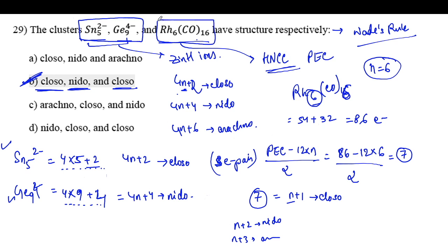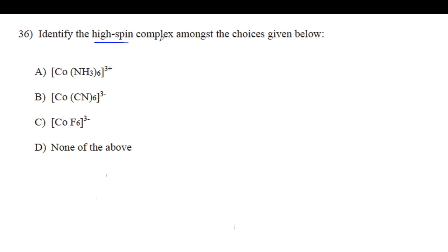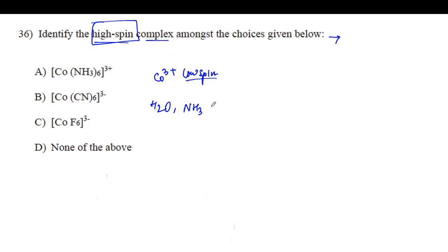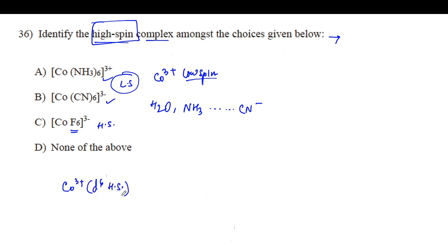Next question: identify the high spin complex among the choices. Cobalt(III) usually forms low spin complexes with strong field ligands like NH3 and CN⁻. However, with weak field ligand F⁻, it remains high spin. So CoF6³⁻ is a high spin complex, and option C is the correct answer.